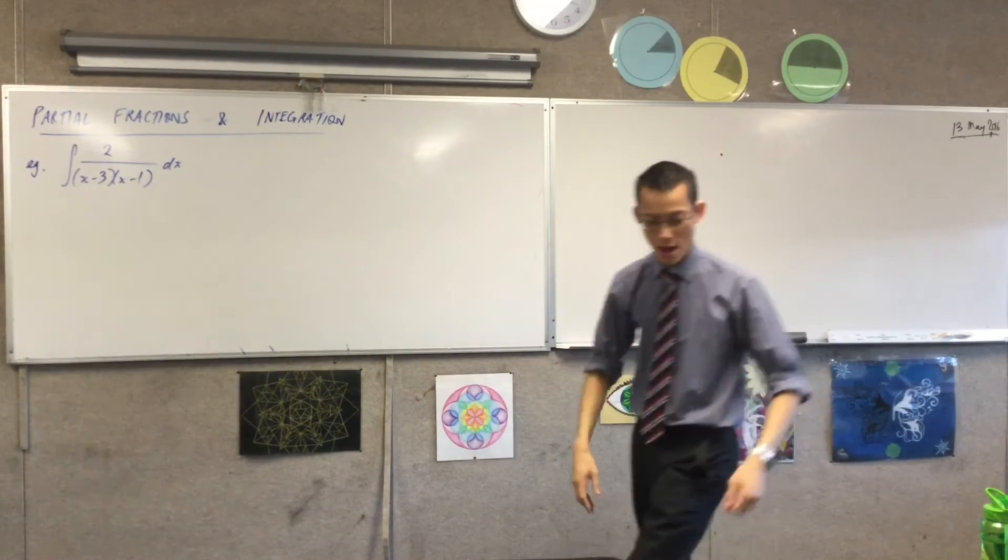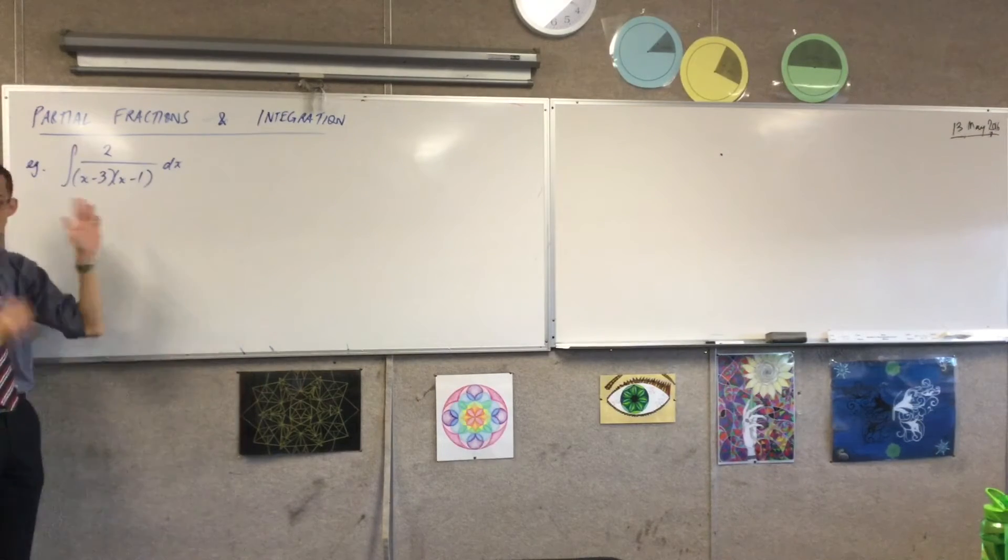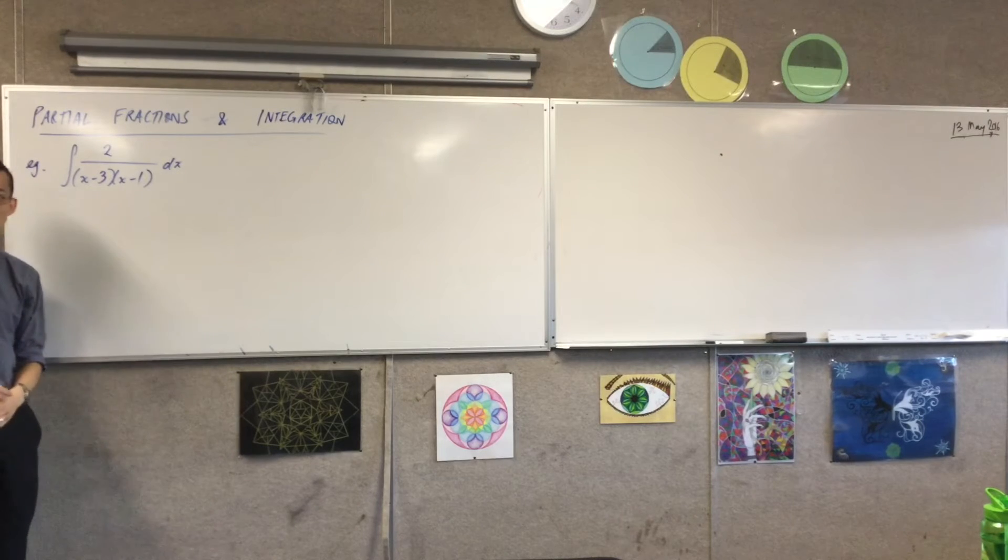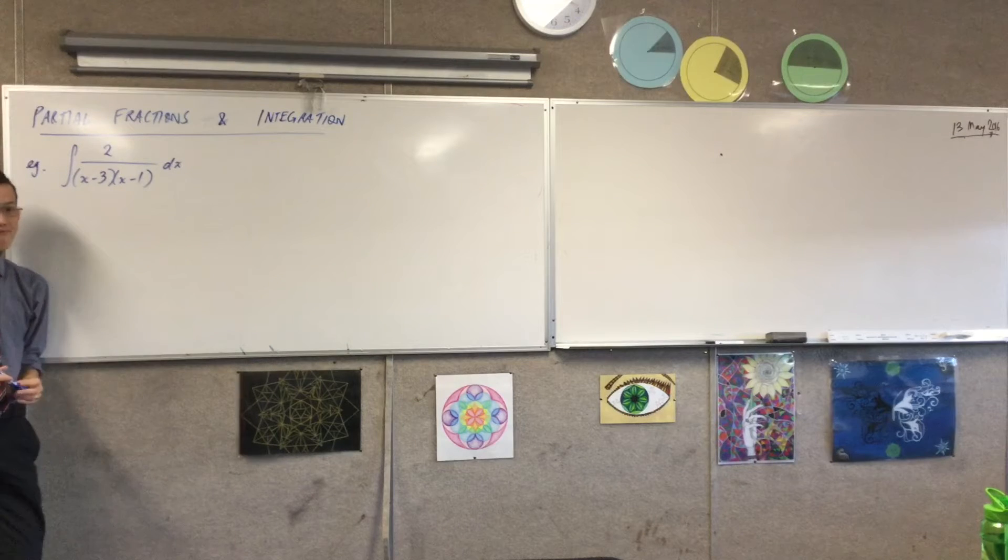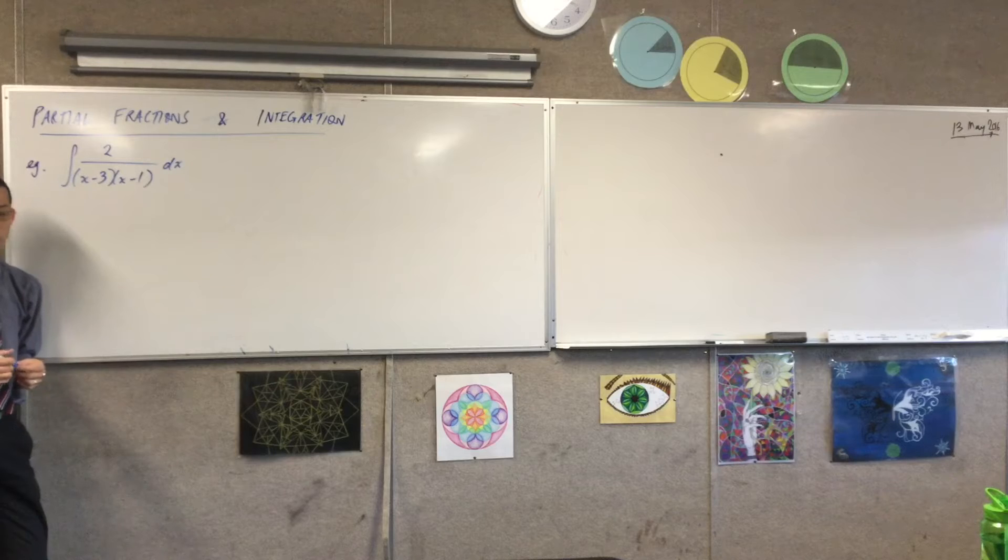So partial fractions we looked at under polynomials. Let's review this. This guy here, if I just think about it as an integration problem, causes me issues. Why can't I just launch into this as a standard form? You would need to have a quadratic at the bottom and then a complete formula.